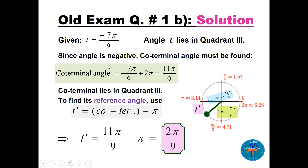For part b, t = -7π/9 is a negative angle, so we find the co-terminal by adding 2π. Adding 2π to -7π/9 gives 11π/9. Since 11π/9 is in quadrant 3, -7π/9 also lies in quadrant 3. In quadrant 3, t′ equals the co-terminal minus π: 11π/9 minus π equals 2π/9.